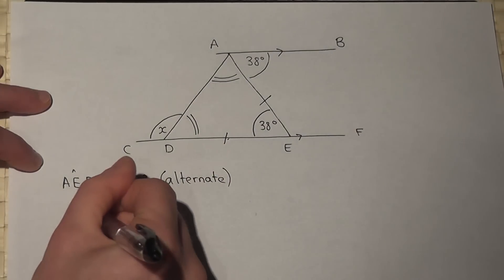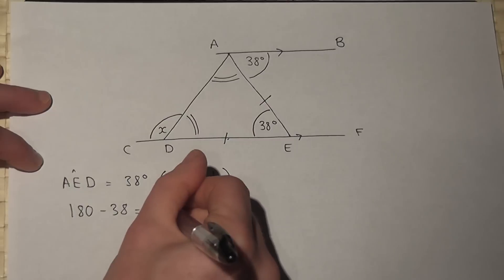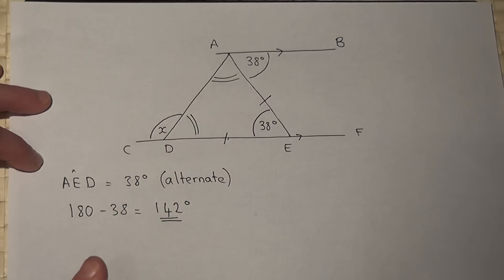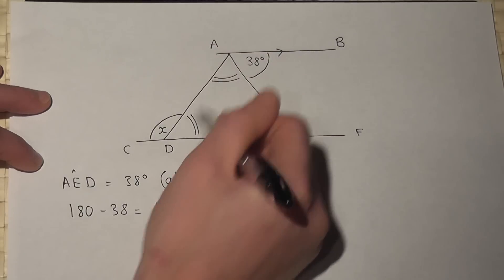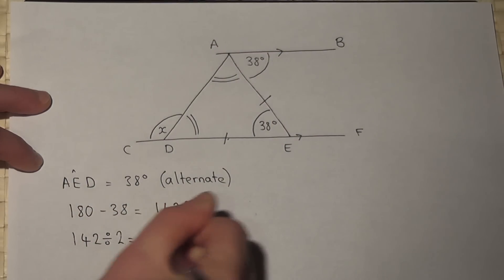It's a triangle. So 180 take away 38 gives me 142 degrees. To find these two angles I do 142 divided by 2 which is 71 degrees.